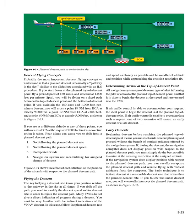Four things can cause you to drift from a planned descent path: 1. Not following the planned descent rate; 2. Not following the planned descent speed; 3. Unexpected winds; 4. Navigation system not recalculating for airspeed change during descent. Flying the descent: the key to flying a descent is to know your position relative to the pathway in the sky at all times. If you drift off the path, you need to modify the descent speed and/or descent rate in order to rejoin the descent path. Many FMSs do not give a direct indication of progress during a descent, so you must be very familiar with the indirect indications of the VNAV descent.